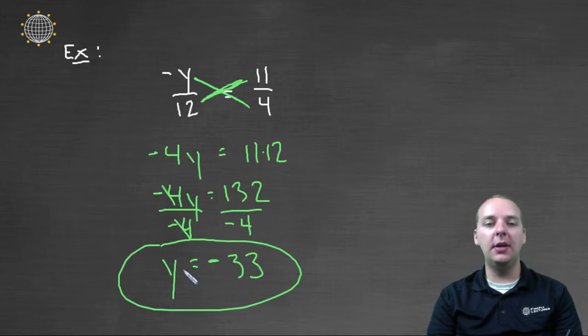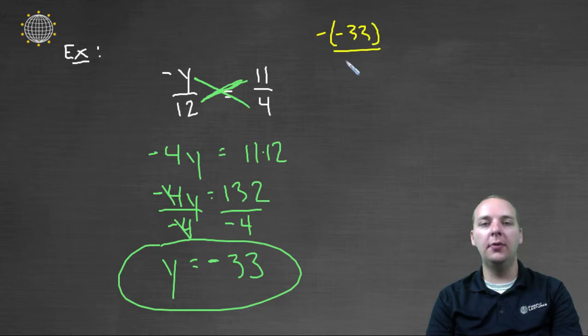So in closing, what does that mean exactly? It means that negative, negative thirty-three over twelve, that ratio would be equivalent to eleven over four, and let's test that theory out.